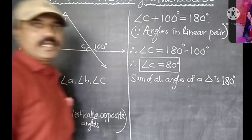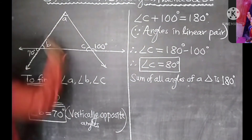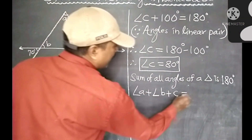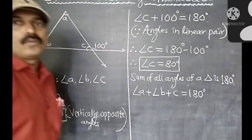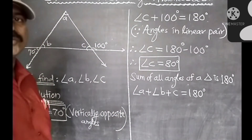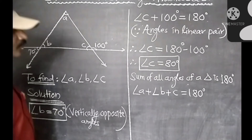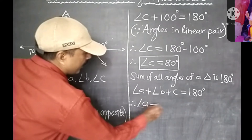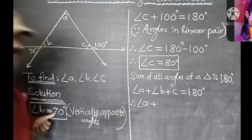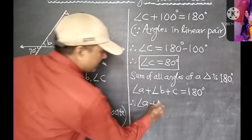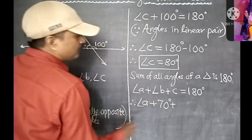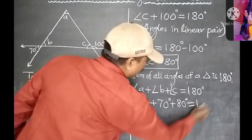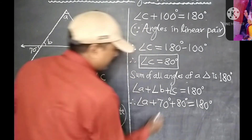We should use the triangle angle sum property: Angle A plus Angle B plus Angle C is equal to 180 degrees. Now we need to find the value of Angle A. Angle B measures 70 degrees and Angle C measures 80 degrees. So: Angle A plus 70 degrees plus 80 degrees is equal to 180 degrees.